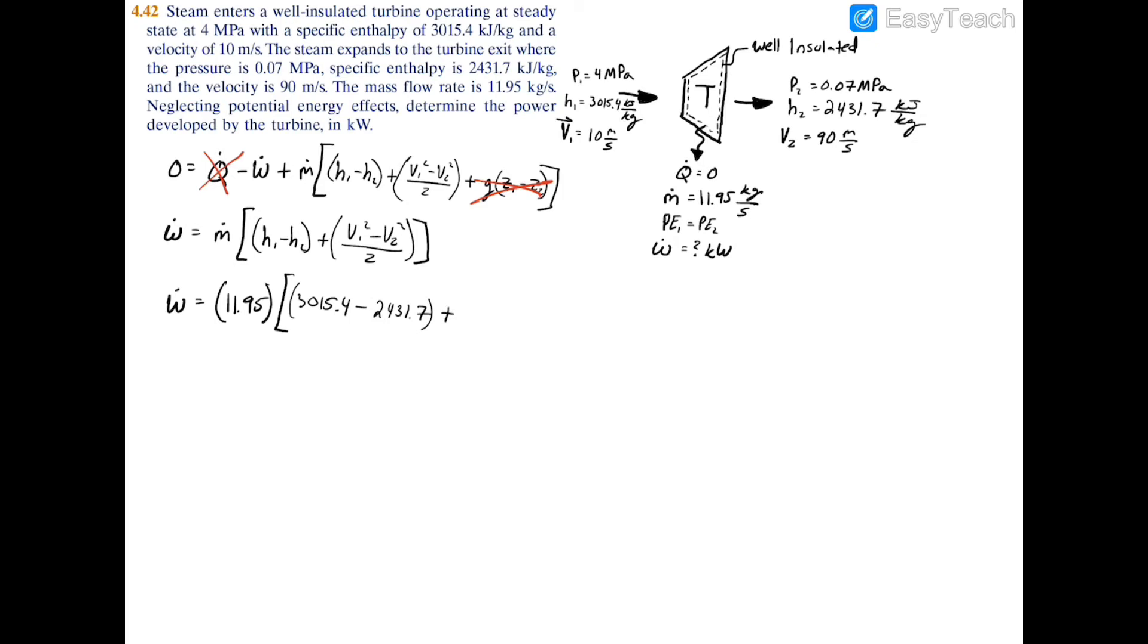And to that we're going to add the velocities, so we'll have 10 square or 10 meters per second squared minus V2, which is 90 meters per, and it's actually going to be meters squared per second squared because you'd square the units, and divide that by 2.